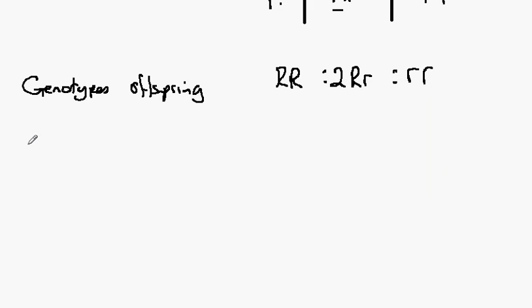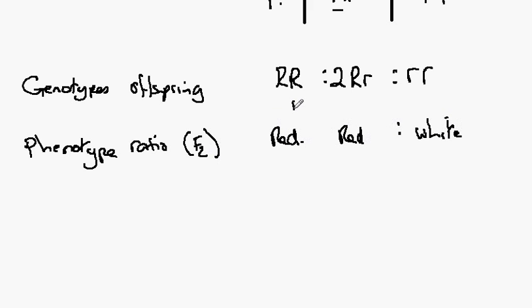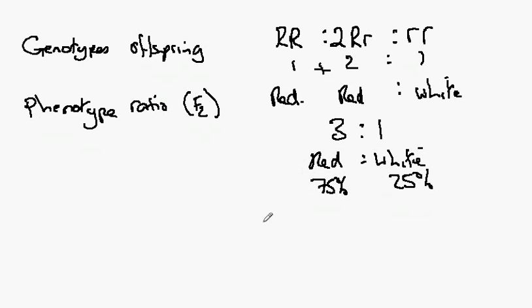Let's turn that into a phenotype ratio. Remember that this is actually what we call the F2 generation. So this would be red, these would be red, and these would be white. So 1, 2, and 1. This would mean, combine these, there's a 3 to 1 ratio of red to white. You might like to rewrite that as a 75% chance of red and a 25% chance of it being white, or a 3 in 4 chance or a 1 in 4 chance. Remember that these are chances and probabilities.